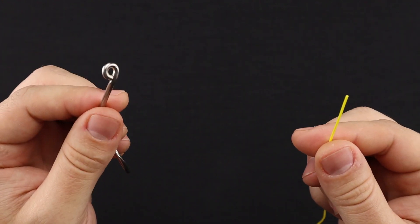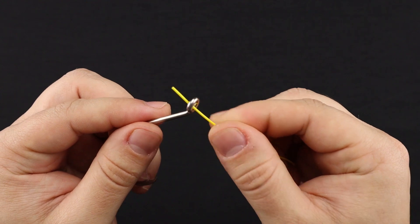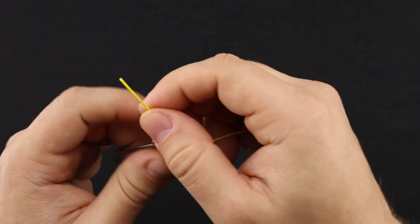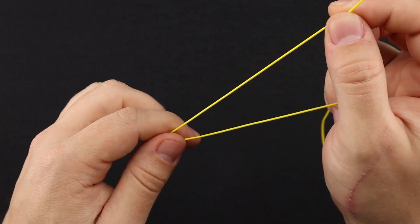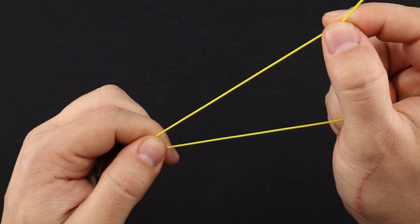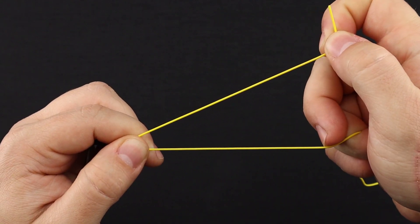With your hook in one hand and your line in the other, place the tag end through the eye of the hook. Give yourself about six inches here to work with of tag end. We're going to wrap this tag end around your main line.